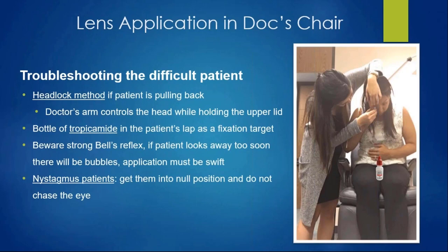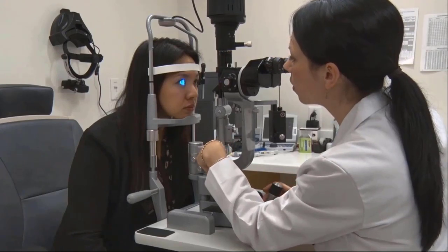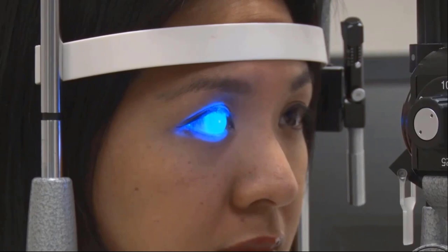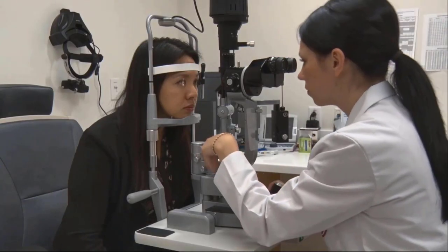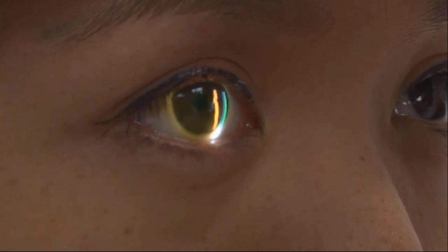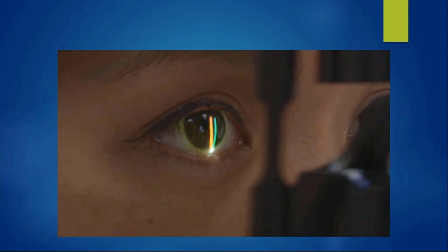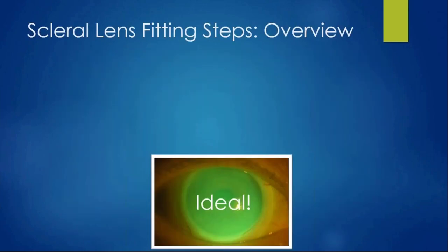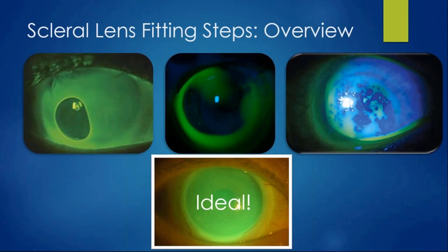Once the lens is on the eye, start with a cobalt blue light overview at the slit lamp—look at everything and get a lay of the land. Ideally you see green beautiful vault going all the way across from limbus to limbus. If instead you see a large air bubble, corneal touch, or really poor lens wetting, you need to stop. If it's a bubble or wetting issue, remove the lens and reapply. Try to keep the patient from looking around to prevent bubbles. Rubbing the lens well and using Biotrue in clinic can help with poor lens wetting.